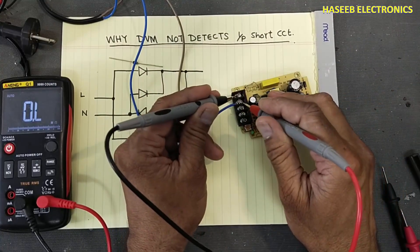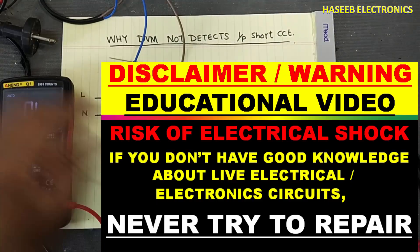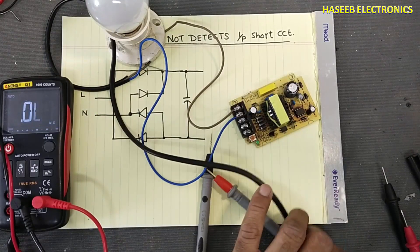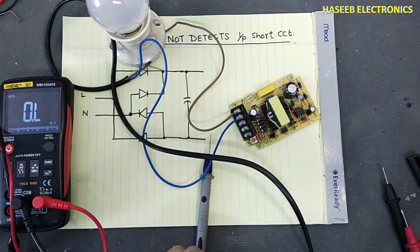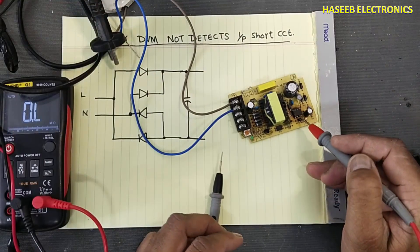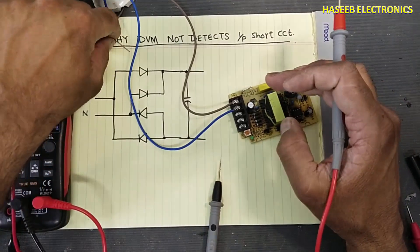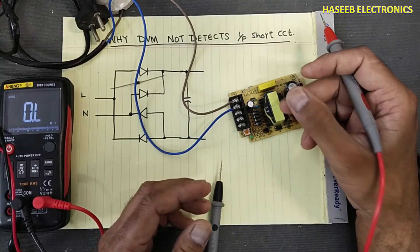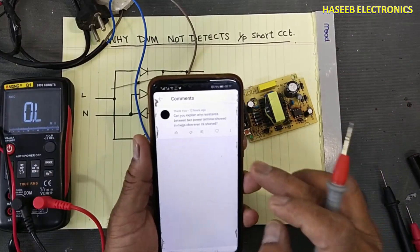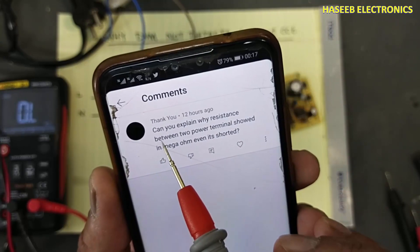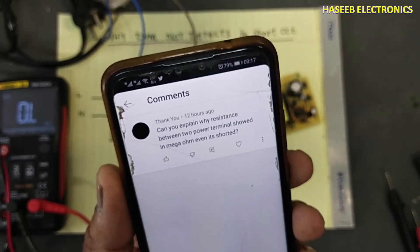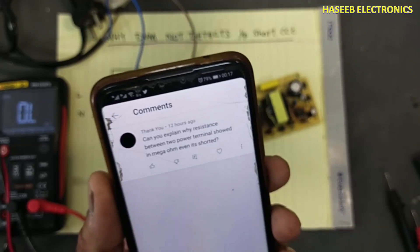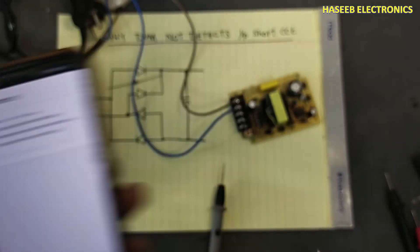When I am testing the resistance here it is showing in mega ohms, but when we connect it practically in the power it is illuminating full — why? Because this IC has an internal short circuit. But what is the reason when we tested with a multimeter it is giving open circuit, eight mega ohms? This is a question from my viewer. Can you explain why resistance between two power terminals showed in mega ohms even when it is shorted? Yes, let's discuss.